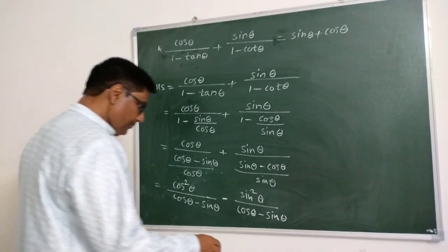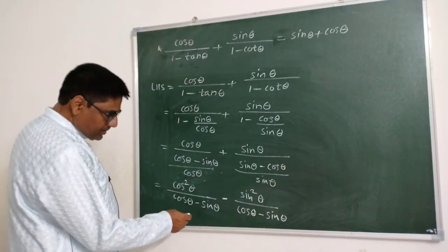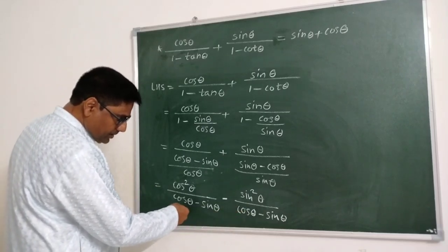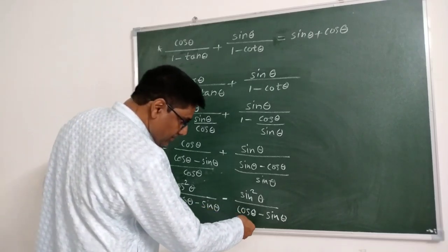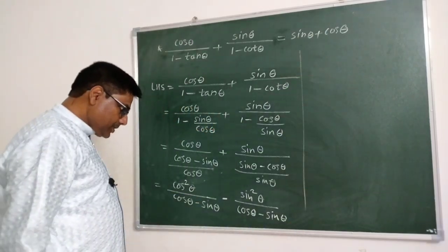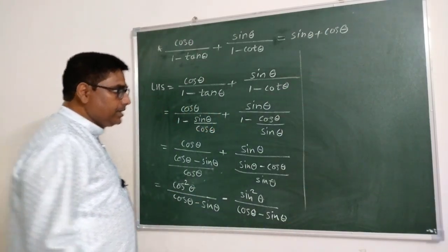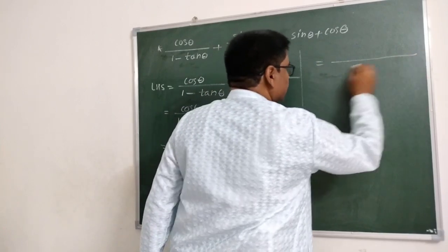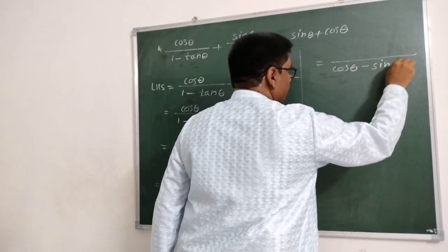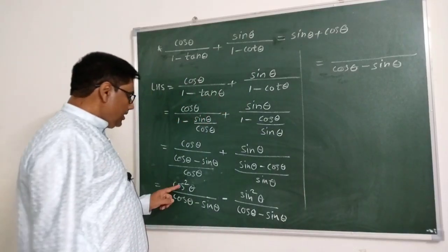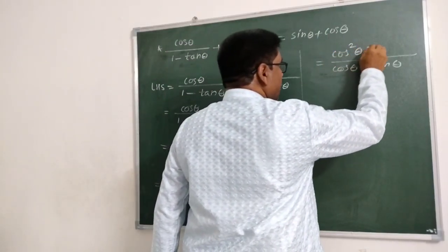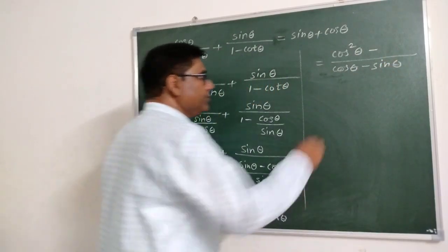Now you can see why we wrote it in this fashion — we have (cos θ minus sin θ) in both denominators. Therefore the LCM is (cos θ minus sin θ), and in the numerator we get cos² θ minus sin² θ.